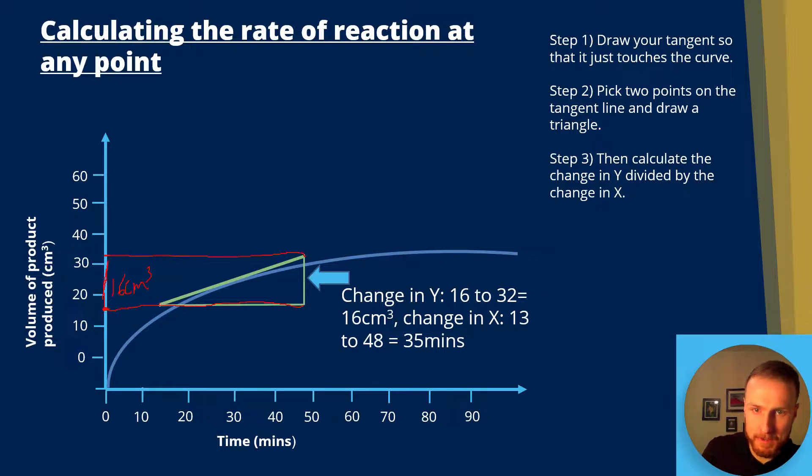So the change in y is going to be divided by the change in x. Well, x goes from here, which I've just put as 13 in my example, and then it goes up to here, which I've just said 48 in my example. The difference between 13 and 48 is 35. So our equation will be 16 divided by 35, and that's going to give us 0.46 centimeters cubed per minute.